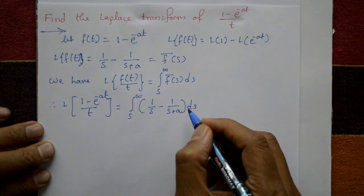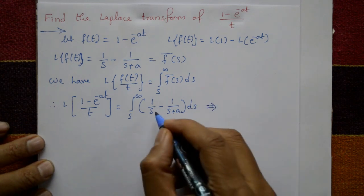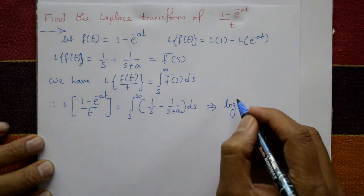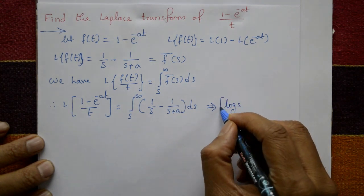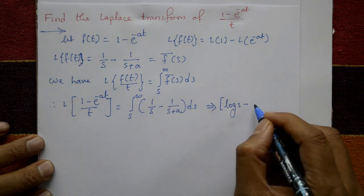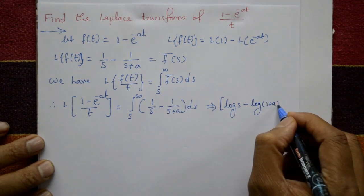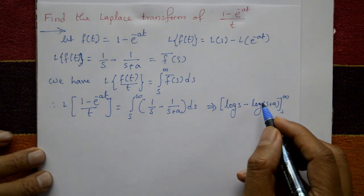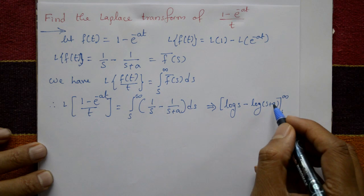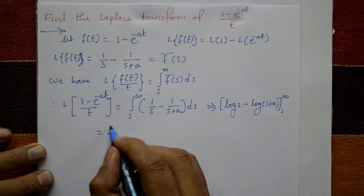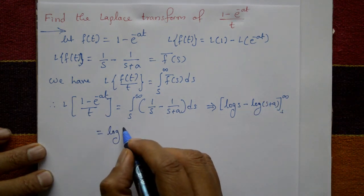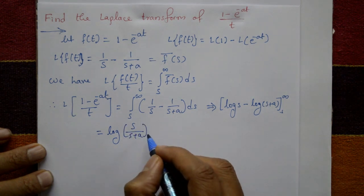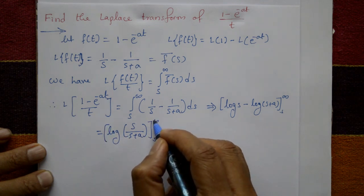Integrating with respect to s: the first term gives log s, and the second gives log of s plus a, evaluated with limit s to infinity. Using the log property log a minus log b equals log a by b, this becomes log of s upon s plus a, with limit s to infinity.